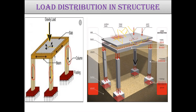We also need to apply wall load on the beams, expressed in kilonewtons per meter. In the terrace portion we apply waterproofing load, and in the toilet portion we apply the sunk portion load — called the sunken load. We'll see how to apply all these loads.